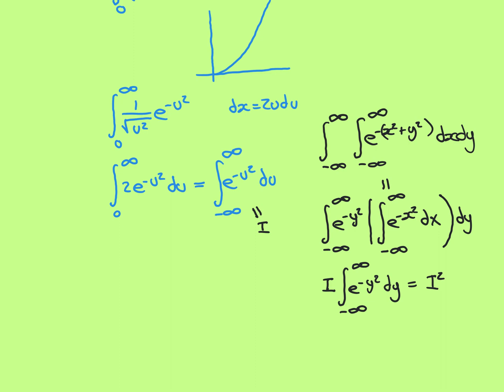The way that a genius figured out how to do this is that they actually considered what looks like a more complicated problem. They went up into the bivariate world — the multivariable calculus world — and considered the function e to the negative x squared plus y squared, which is a bell-shaped surface, a bivariate version of the Gaussian function. They thought about how you would integrate that over the entirety of the R2 plane — find the volume underneath that bell-shaped surface over all of R2.